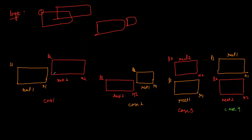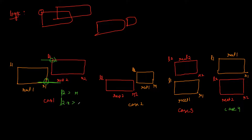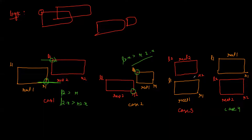For case one, we check L2 and R1: if L2.x is greater than R1.x then we know they are not overlapping, because we are checking the left and right positions using x values. For case two, we check L1 and R2: if L1.x is greater than R2.x, then we are done and we know they are not overlapping.